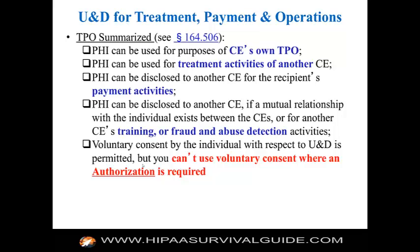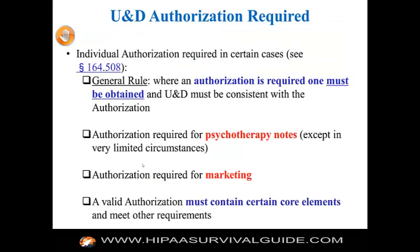Voluntary consent by the individual with respect to uses and disclosure is permitted, but you can't use voluntary consent where an authorization is required. Authorization is a term of art under the privacy rule — it requires a written format and certain formal steps must be taken. Individual authorization is required in certain cases, and the use and disclosure must be consistent with the authorization. Authorization is required for psychotherapy notes except in very limited circumstances. Authorization is required for marketing. A valid authorization must contain certain core elements, requiring specific language — similar to business associate contracts.